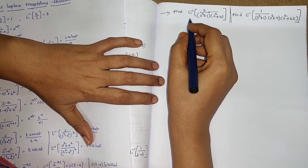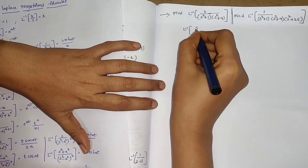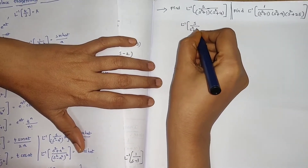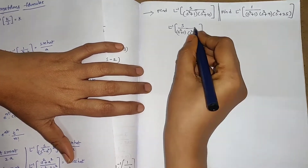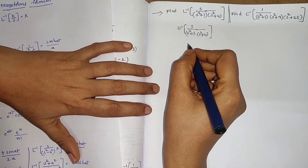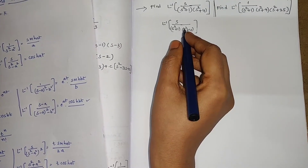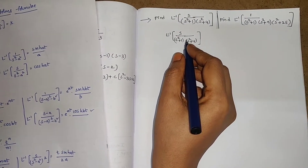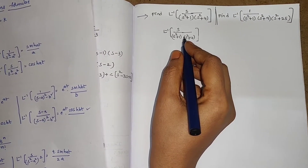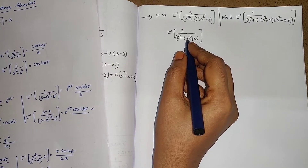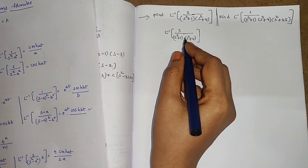Find L inverse of S divided by (S² + 1)(S² + 4). In the denominator we are observing a product of quadratic polynomials. If two quadratic polynomials are present and you reduce this into partial fractions, you will get Ax + B and Cx + D — that means 4 constants A, B, C, D to determine. If you reduce this into partial fractions, you get 4 equations in 4 unknowns.